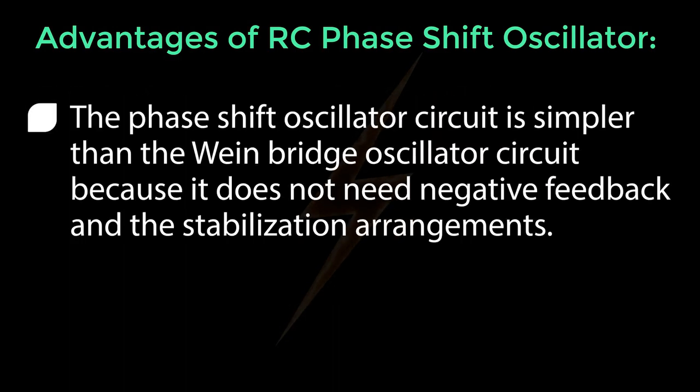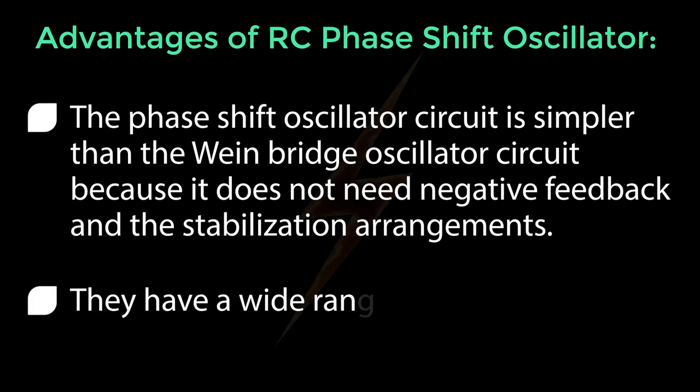The phase shift oscillator circuit is simpler than the Wien bridge oscillator circuit because it does not need negative feedback and the stabilization arrangements. They have a wide range of frequency from a few hertz to several hundred kilohertz.